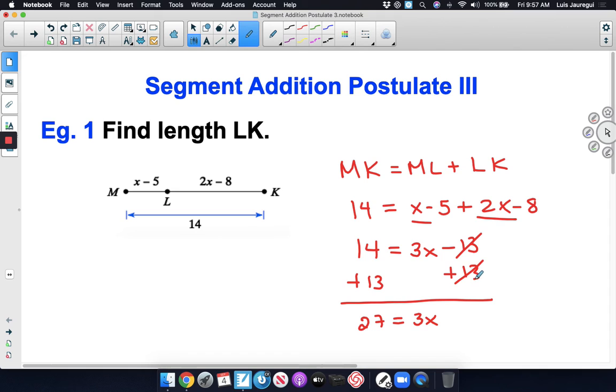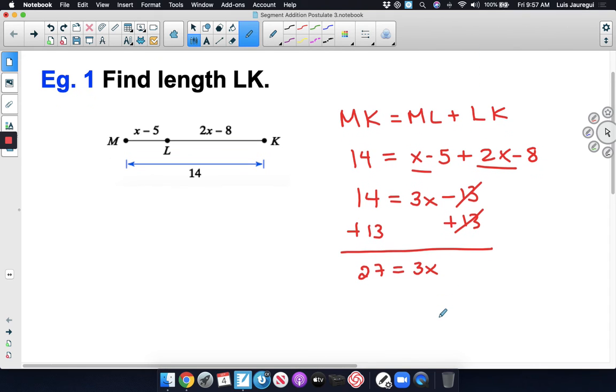So we can just say 3x plus 0 is just 3x. So now we go ahead and divide by 3 to get x by itself. Notice 27 divided by 3 gives you 9. So we get 9 is equal to 3 divided by 3 is 1, and 1 times x is just equal to x. So we have the x value.